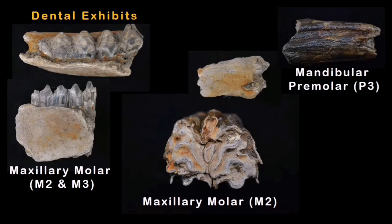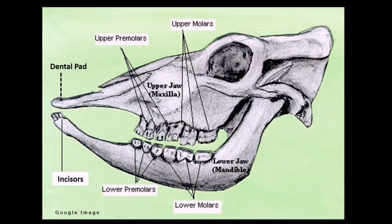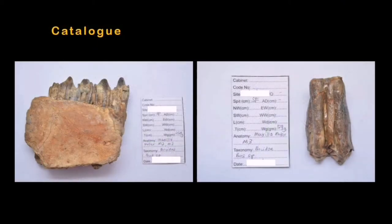Some of you might be asking what is maxillary and what is mandible. The diagram shows that the mandible refers to the lower jaw while maxillary refers to the upper jaw. In bovine, they don't have a frontal maxillary incisor — it has been replaced by a dental pad — and they have a diastema, a hollow space between the incisor and the molars.